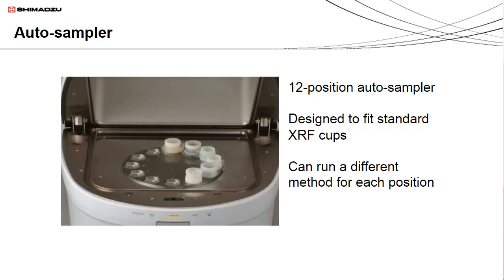Shimadzu's energy dispersive X-ray fluorescence spectrometers can also be equipped with a 12-position auto sampler designed to fit a variety of XRF sample cups. With the auto sampler, you can continuously measure replicates and different samples without ever coming back to the instrument. You can also set different cups that have samples meant for different methods — for example, a cup at position one where you want to know the lead content in a material, and another cup with a method specifically optimized for the detection of noble metals like iridium and platinum. This can all be set up in a method queue such that when the method is set up, you never have to return to the instrument.